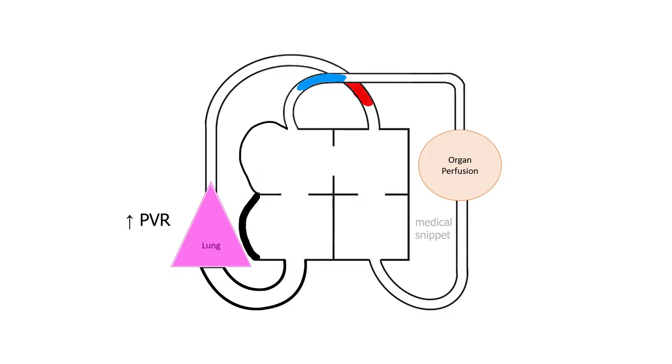As pulmonary vascular resistance increases, the right ventricle struggles. The patient may develop right heart failure. The patient starts to develop tricuspid regurgitation due to dilated tricuspid annulus and due to increased right ventricular afterload, that is increased pulmonary vascular resistance.